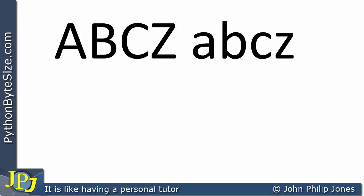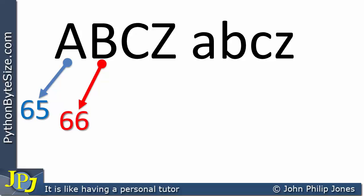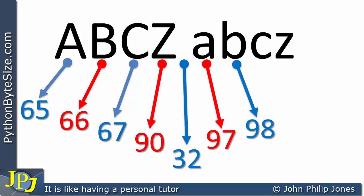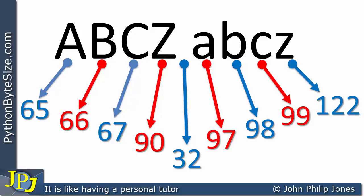Let's say you type A, B, C, Z in uppercase, then a space, then A, B, C, Z in lowercase. Every keystroke would have generated the binary pattern associated with it. So uppercase A is 65, B is 66, C is 67, Z is 90, space is 32, lowercase a is 97, b is 98, c is 99, and lowercase z is 122.